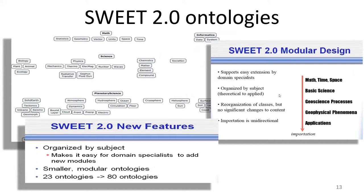SWEET 2.0 was changed from 1.0 by making it more modular and increasing the number of ontologies — from 23 to approximately 80, organized by subject, small in size, and covering various types of concepts ranging from biology to hydrosphere and other relevant concepts.